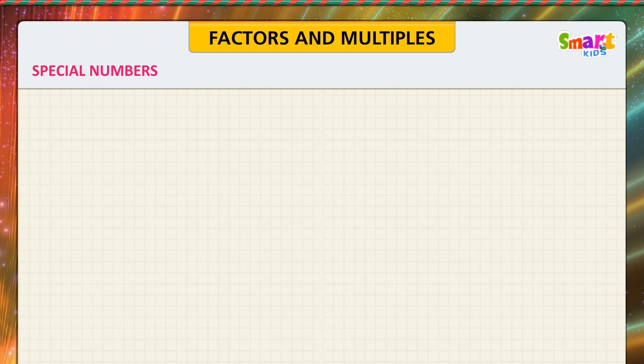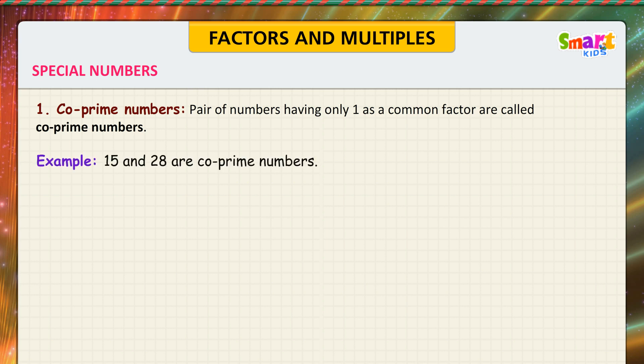Special Numbers. Now we are going to know special numbers. Coprime Numbers: Pair of numbers having only 1 as a common factor are called coprime numbers. See the example. 15 and 28 are coprime numbers.